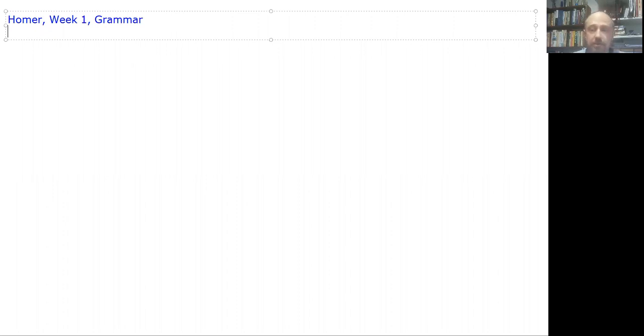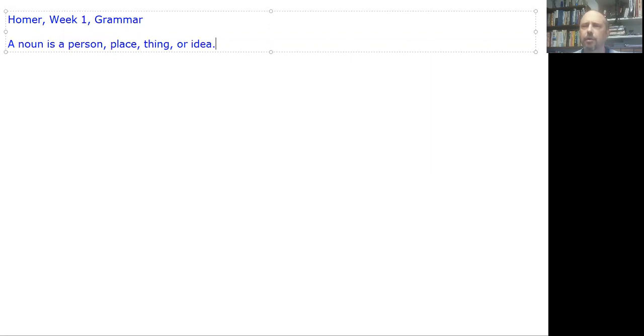So the first thing that we need to know, of course, is what is a noun, right? Definitions are very important. A noun is a person, place, thing, or idea. You need to know that. If you did not already know that, you need to know that.